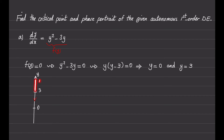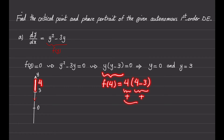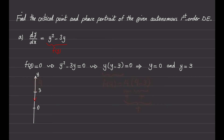The next region is for values of y greater than 3, and we can pick a value of 4 and find the sign of f(4), which is 4 times 4 minus 3. Since 4 is positive and 4 minus 3 is positive, f(4) will have a positive sign, so we can draw an upward arrow there.